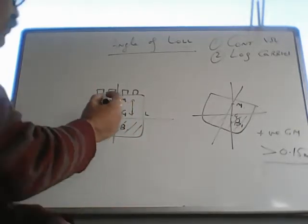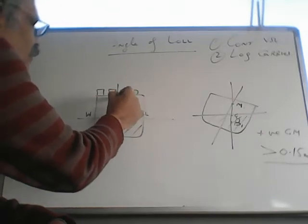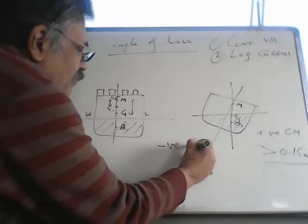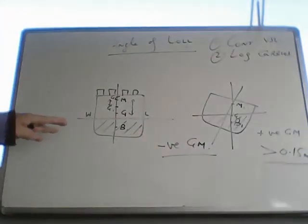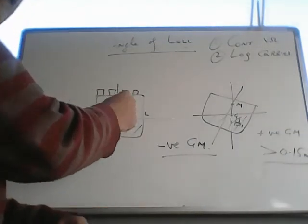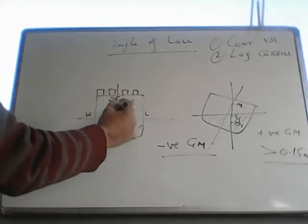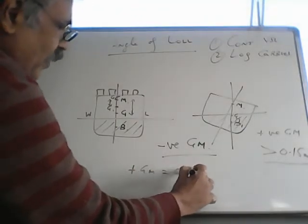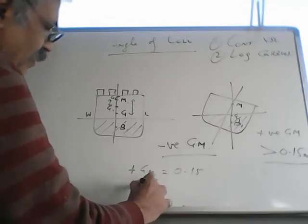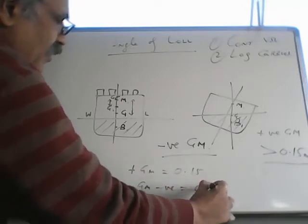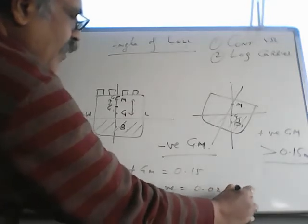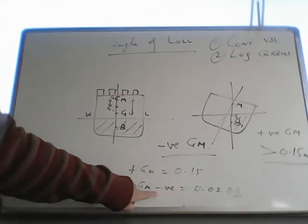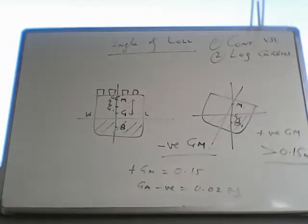And if G comes on top of M here, that is known as negative GM. If you sail out in this condition, maybe you have miscalculated - you thought you had a positive GM of 0.15, but actually your GM was negative 0.02. Or you did not calculate due to some reason, and you sailed out in this condition with a negative GM of 0.02 meters.